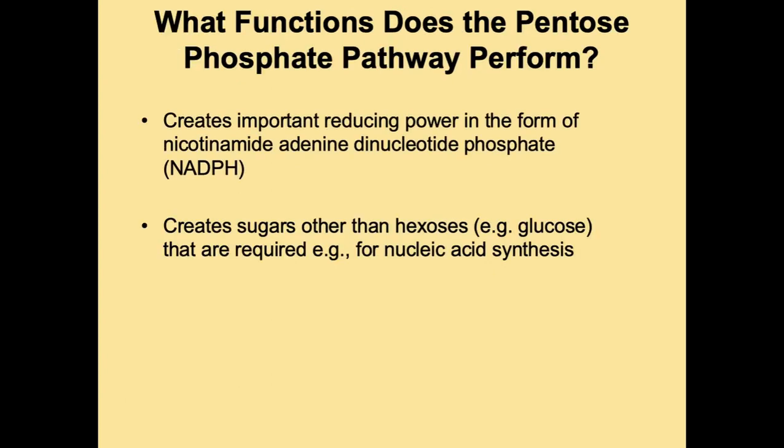So why do we need the pentose phosphate pathway? One important function is the creation of reducing power, and it does this by creating NADPH. It also creates sugars different from hexoses — the six-carbon sugars — and creates pentoses, from which the pathway gets its name. These are five-carbon sugars required for nucleic acid synthesis. The nucleic acid sugars are ribose and deoxyribose — deoxyribose is in DNA whereas ribose is in RNA.